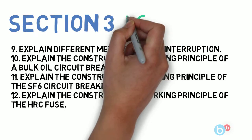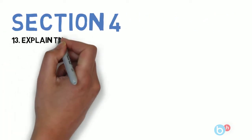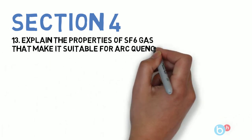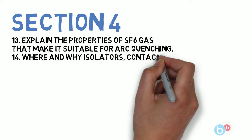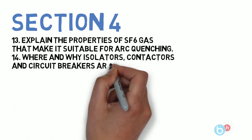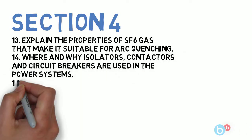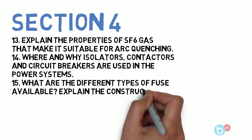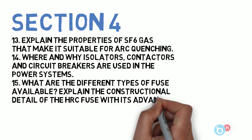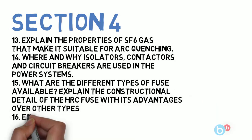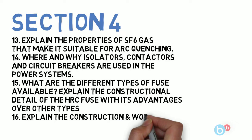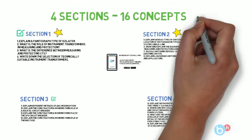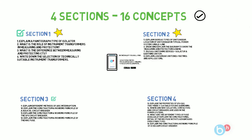Section four has four questions: first, why are isolators, contactors, and circuit breakers used in power systems; next, explain the properties of SF6 gas that make it suitable for arc quenching; then, what are the different types of fuses available and explain the constructional details of an HRC fuse with advantages over its types; and finally, explain the construction and working of a vacuum circuit breaker.